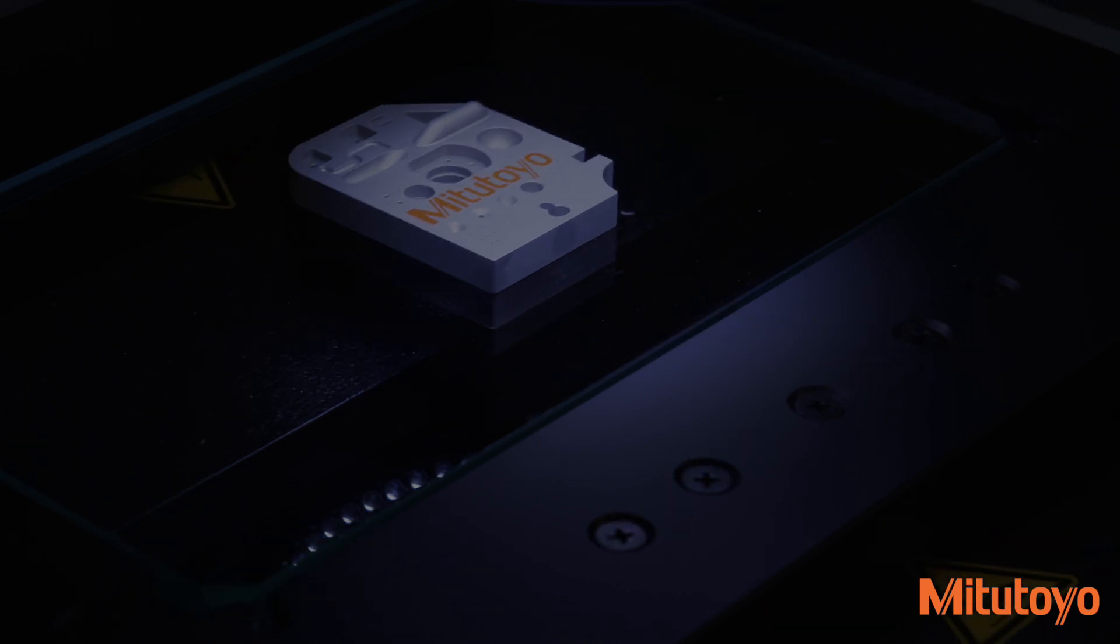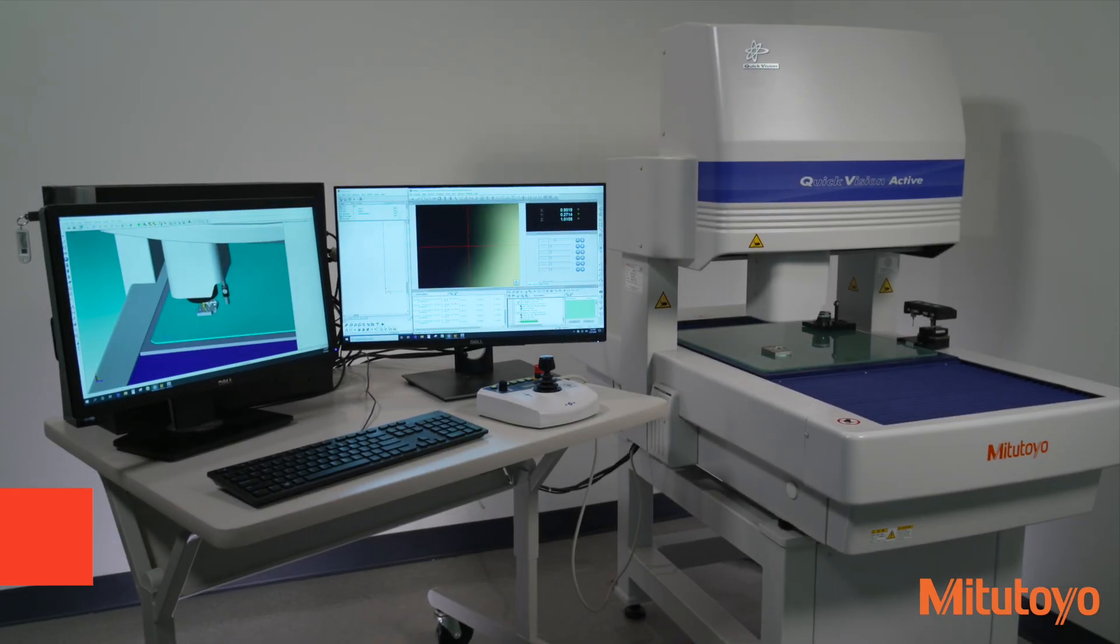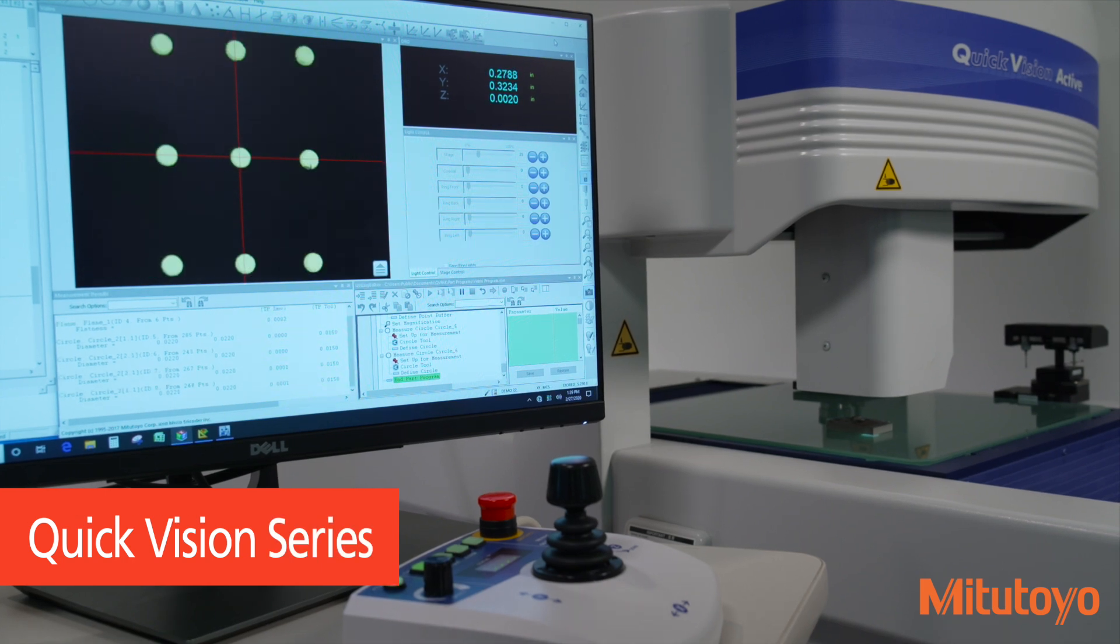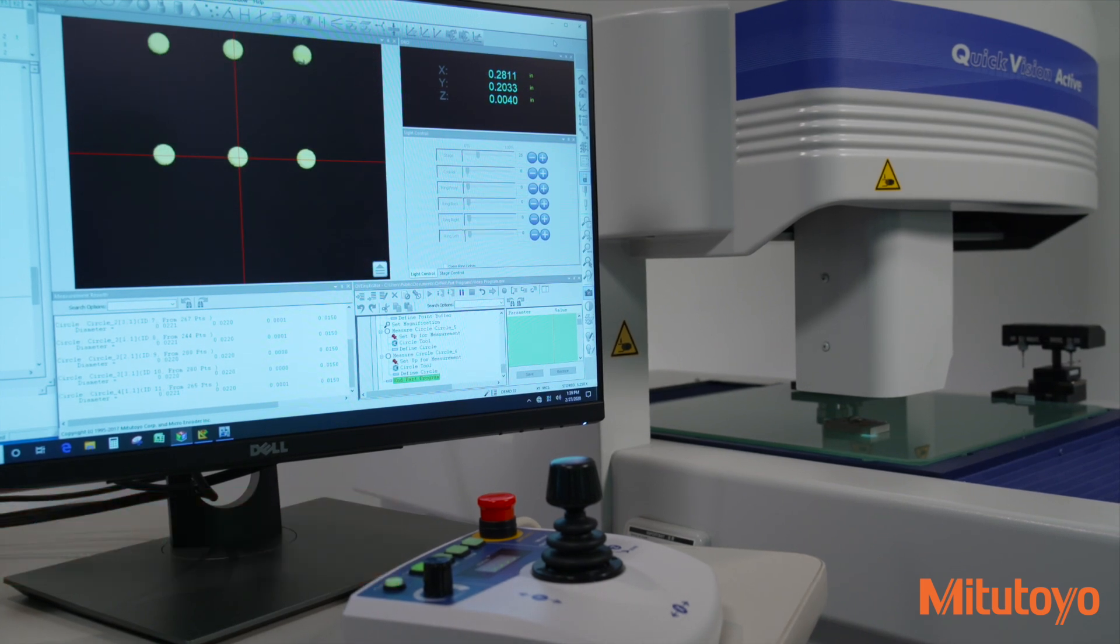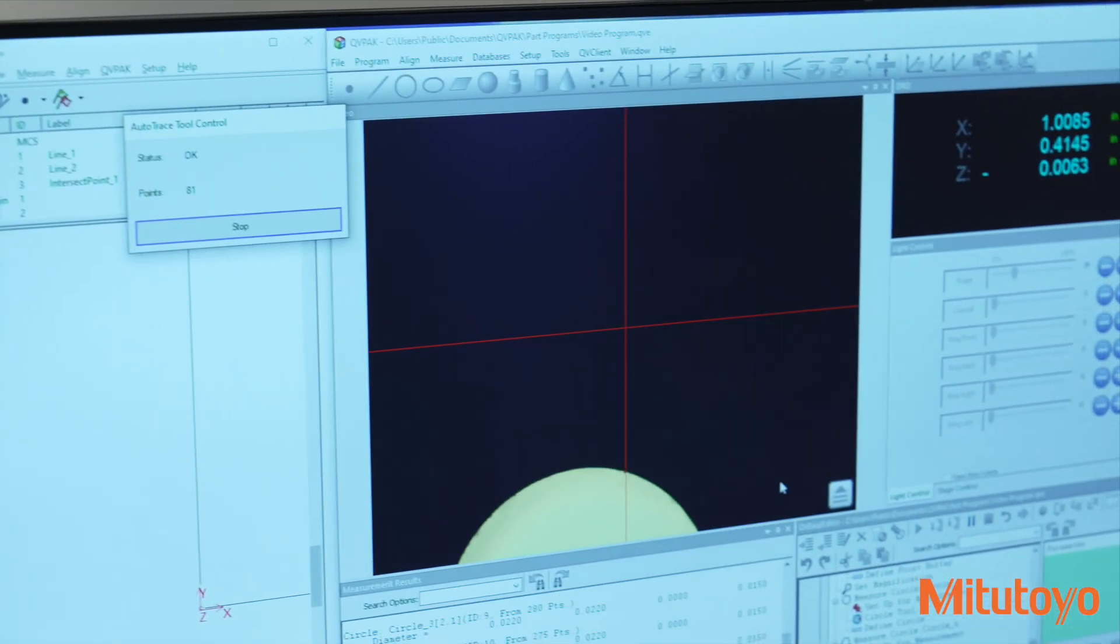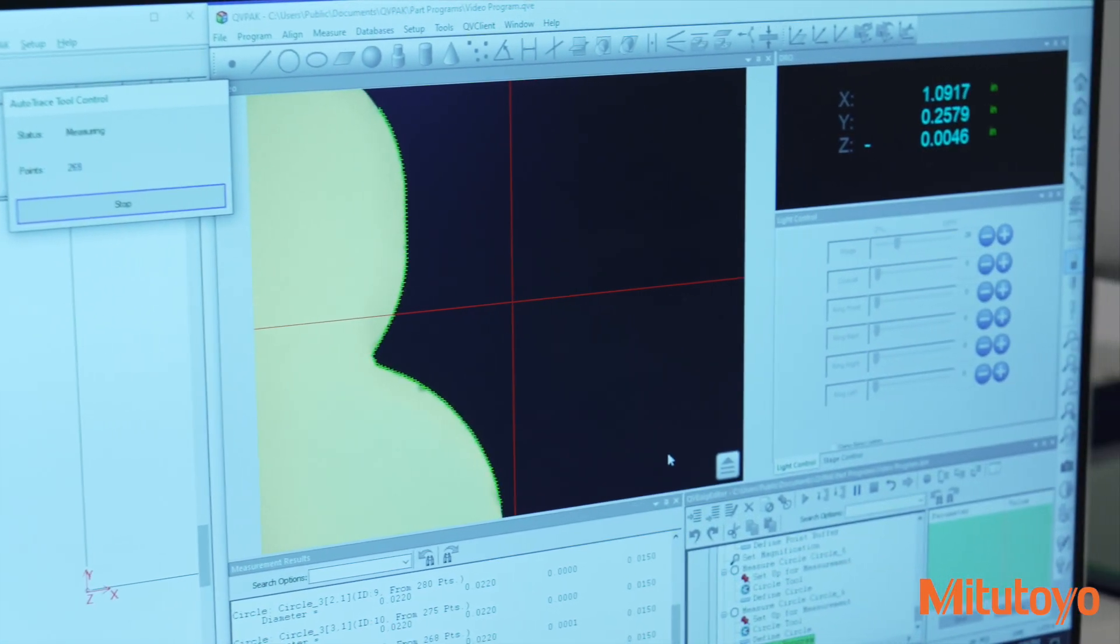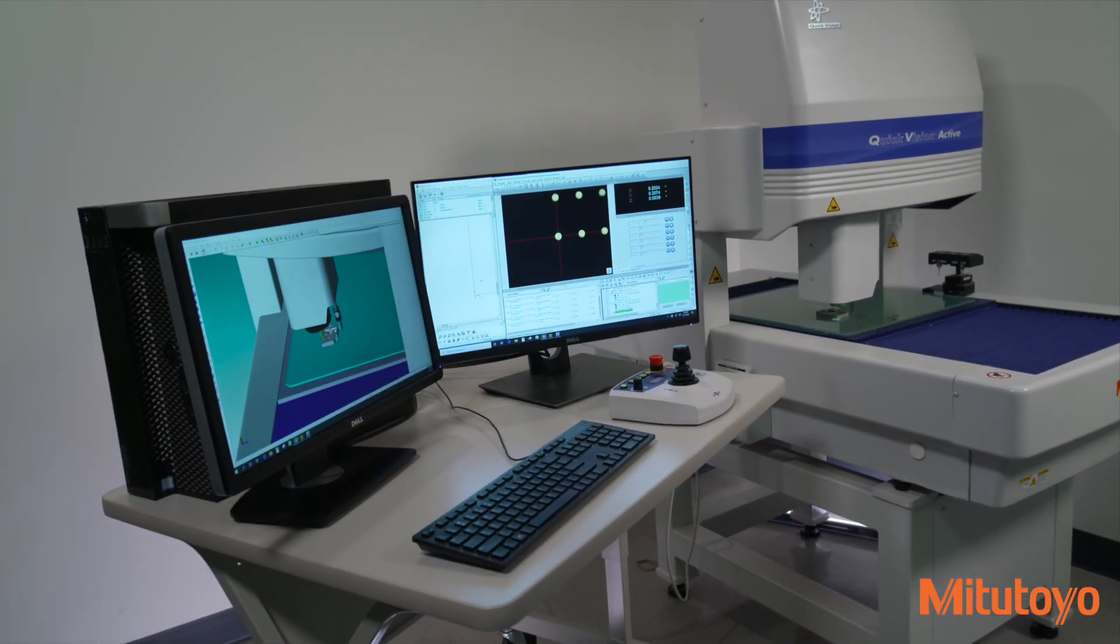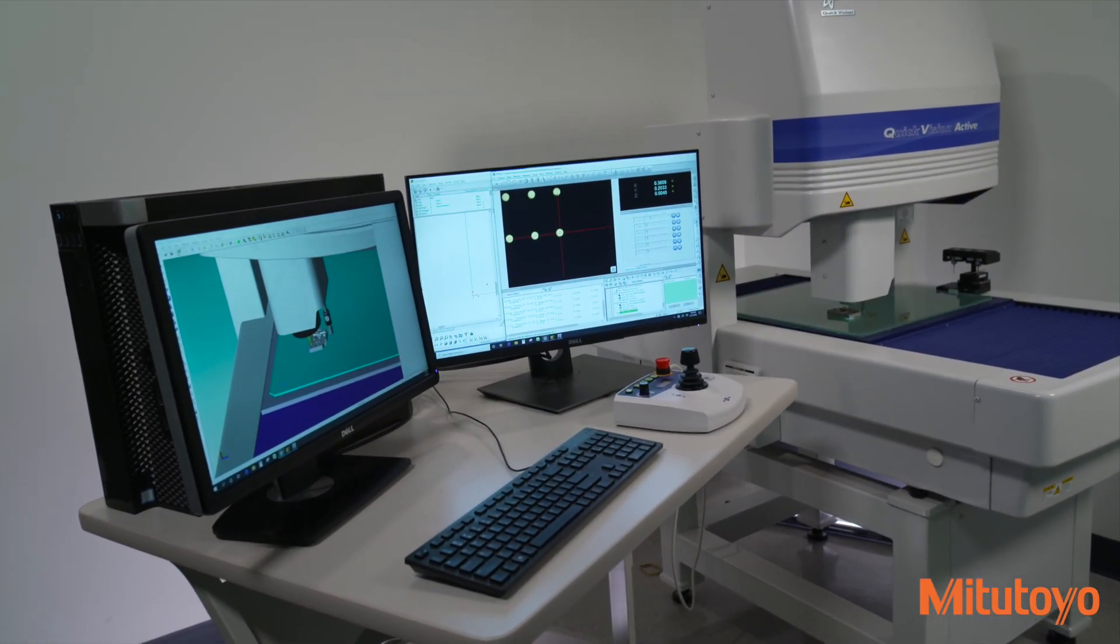Quick Vision CNC measuring systems feature sophisticated edge detection capabilities, an illumination wizard, and advanced user-friendly software for exceptional performance and high-accuracy non-contact dimensional measurements in a compact machine.